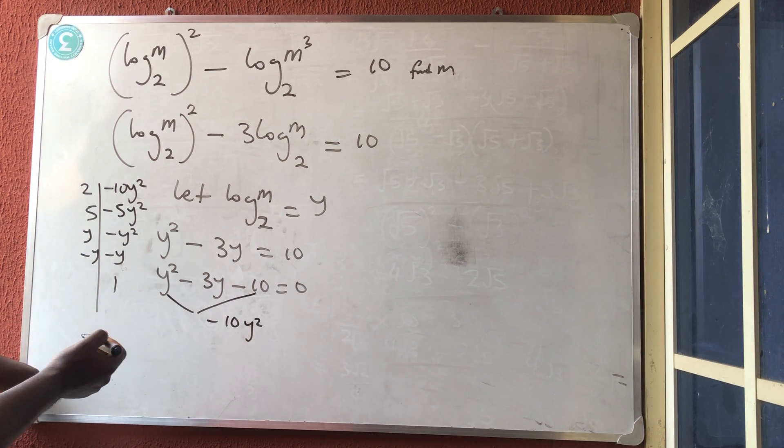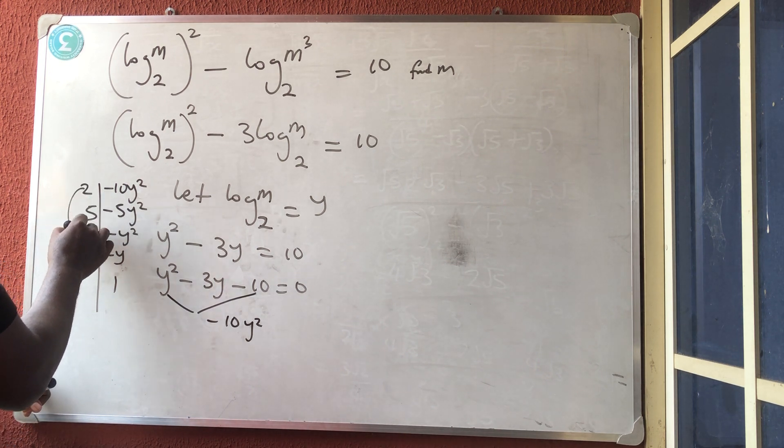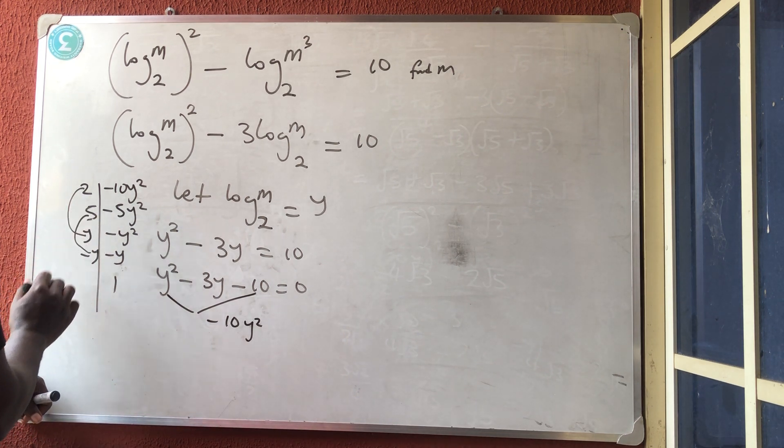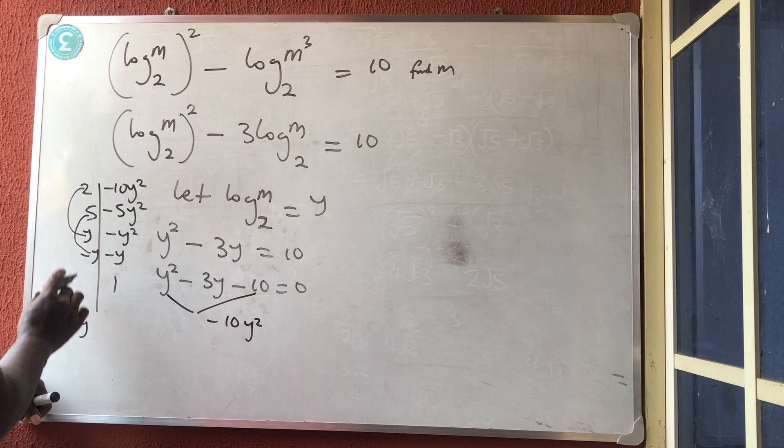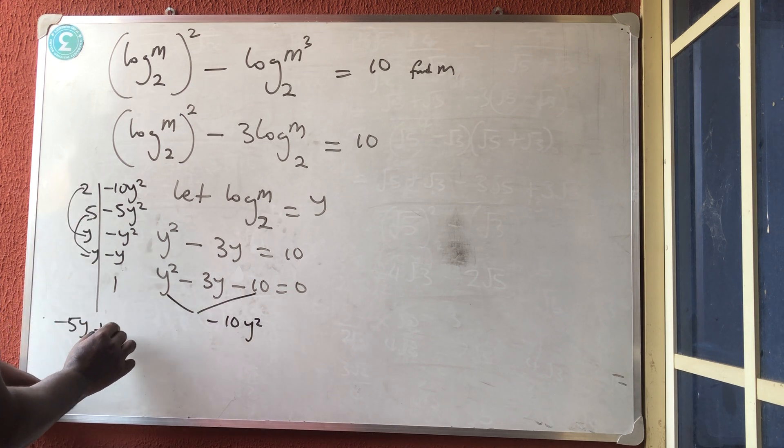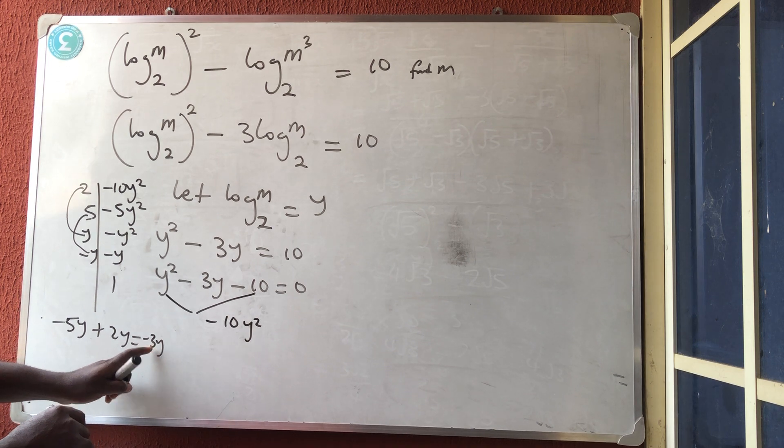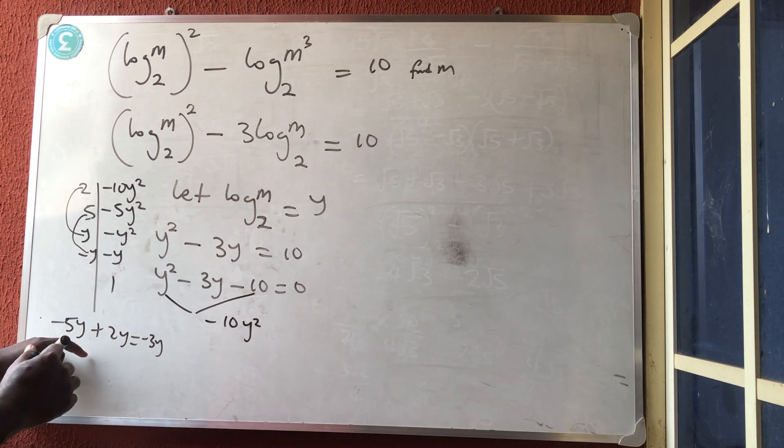So let's check it out. This times this, minus 5y. This times this, plus 2y. And both of them give me minus 3y. So anyway, I see minus 3y, I'll put minus 5y plus 2y.